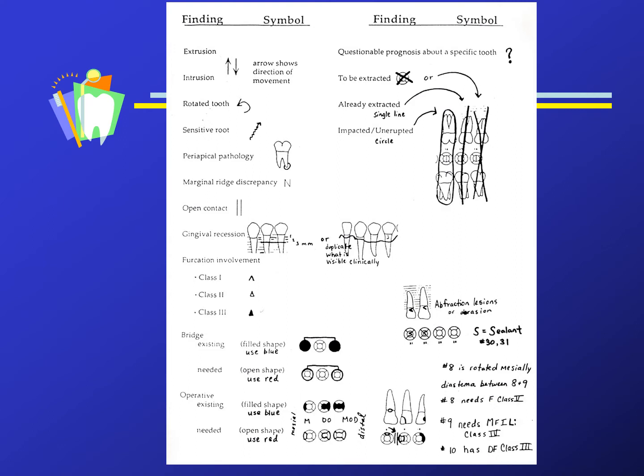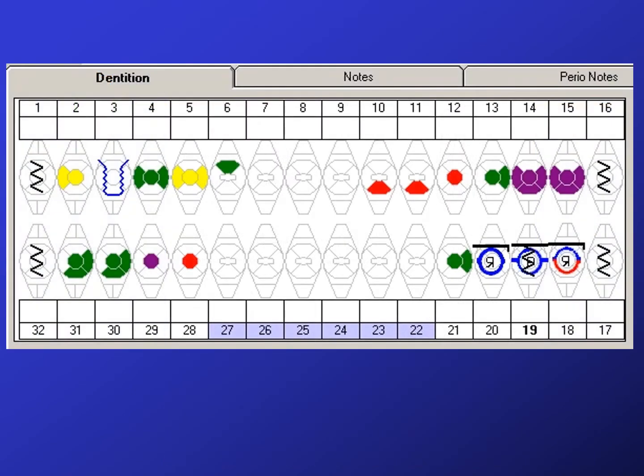A charting diagram is called an odontogram. These are some of the symbols used when we used a paper chart. Symbols may or may not look like what they are symbolizing in the mouth. With digital charting, we have numerous colors we can use and various symbols.